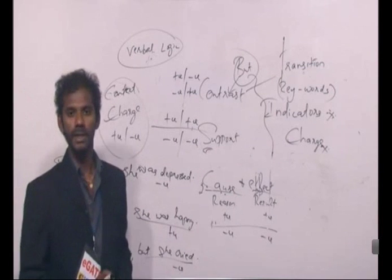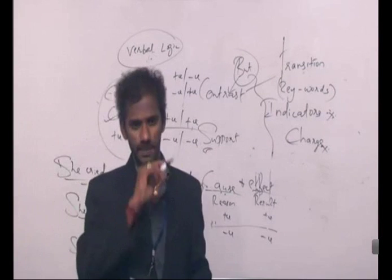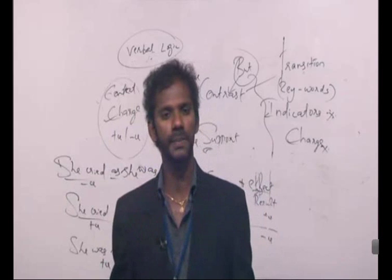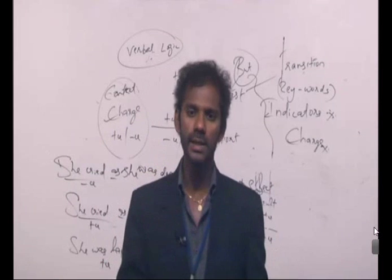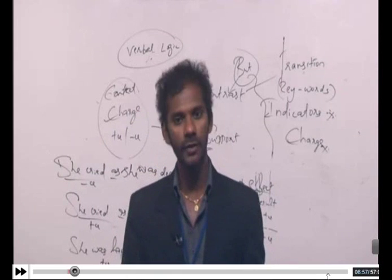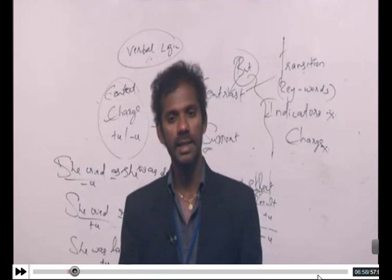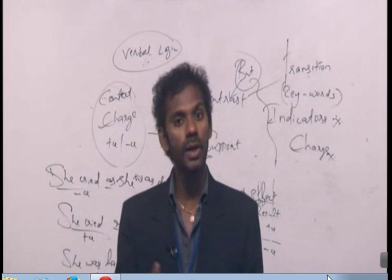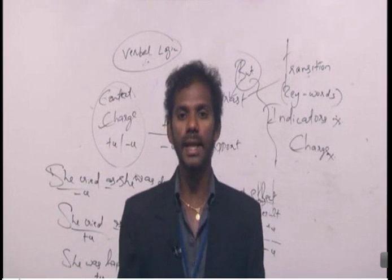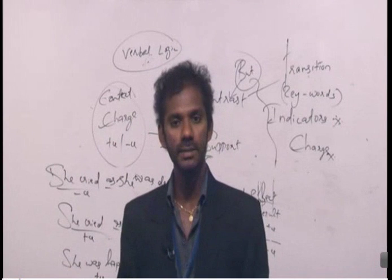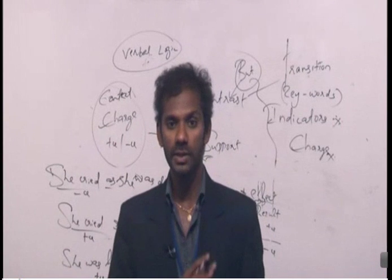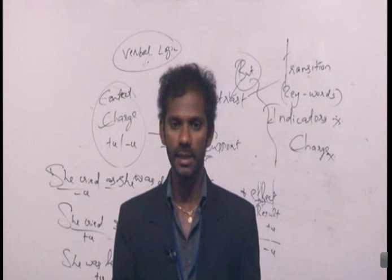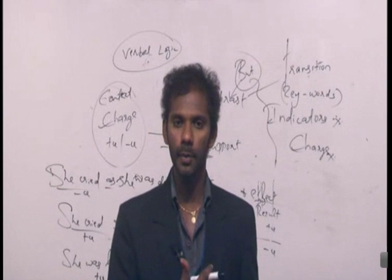As I said, learn the list of indicators by heart. On seeing those words, you must be able to identify whether they are support indicators, contrast indicators, or cosmic indicators, and then think accordingly about the charge. These are the three kinds of indicators in English: contrast, support, and cosmic.